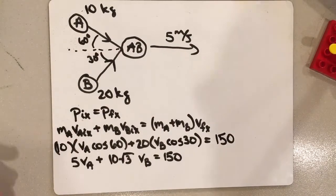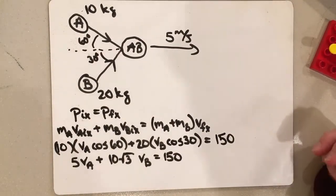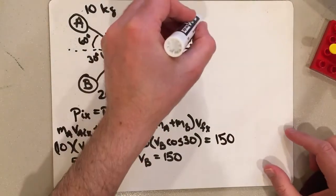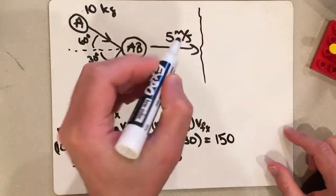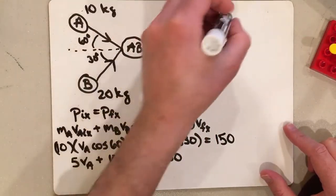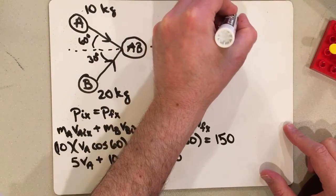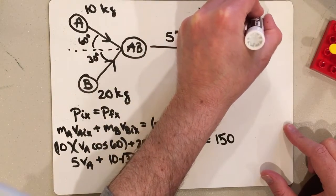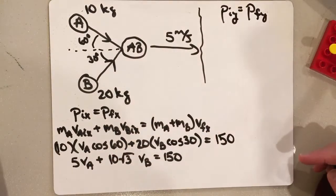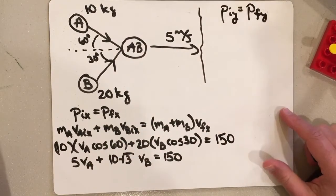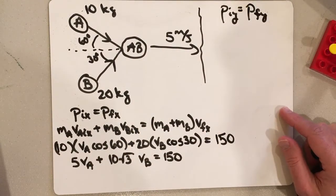I need another equation, and that's going to come from the Y momentum. So we're going to do law of conservation momentum, but we're going to apply it to the Y direction. So that's going to mean P initial Y has to equal P final Y.